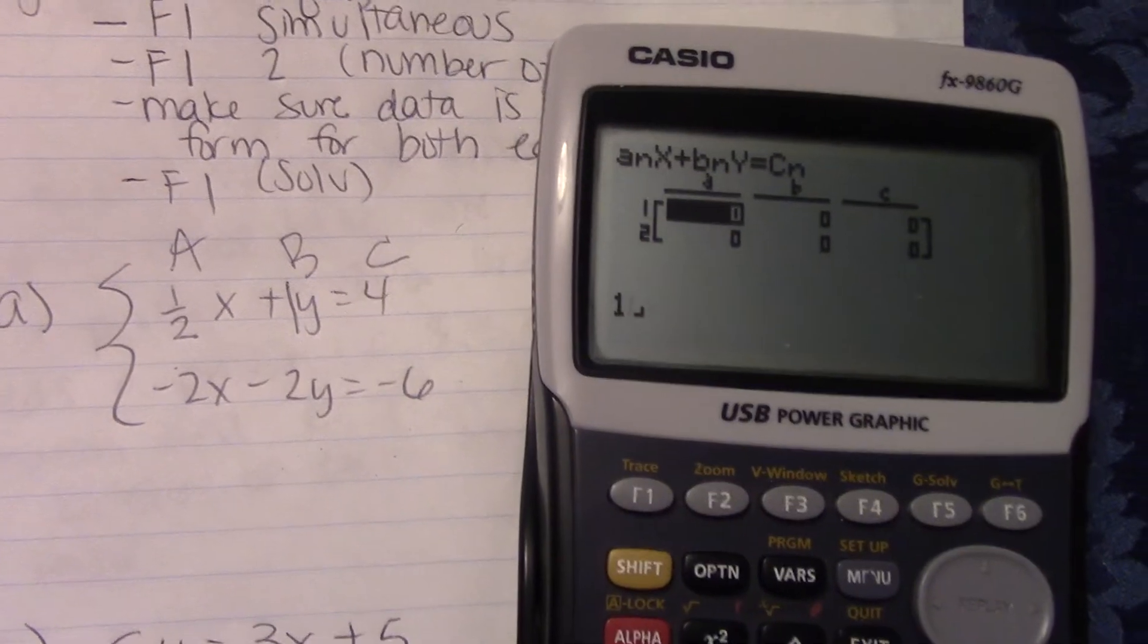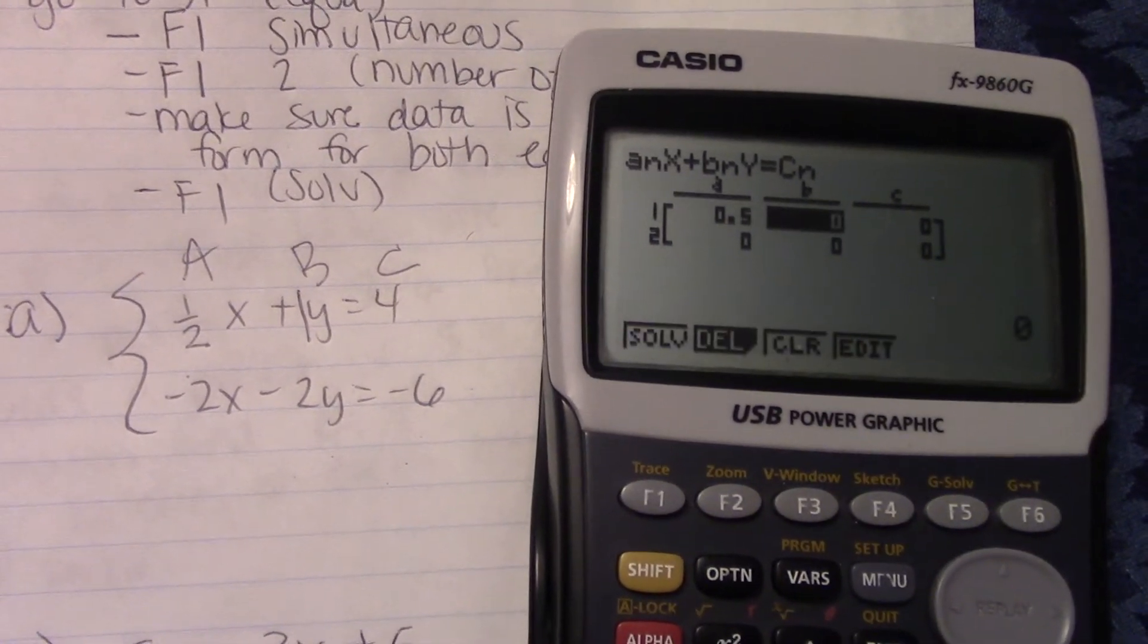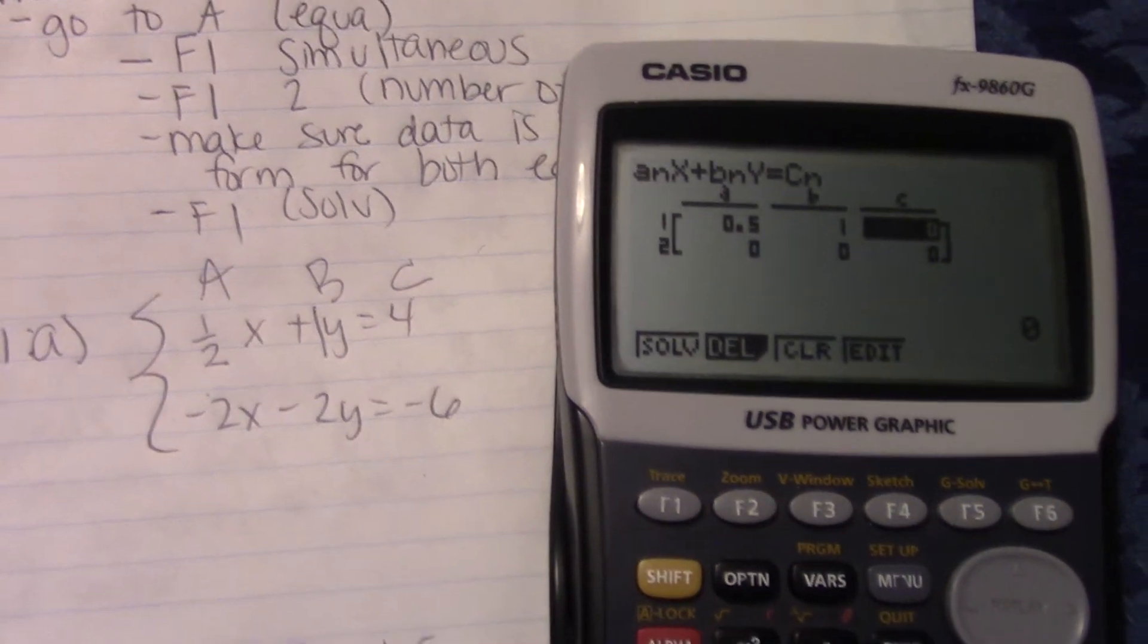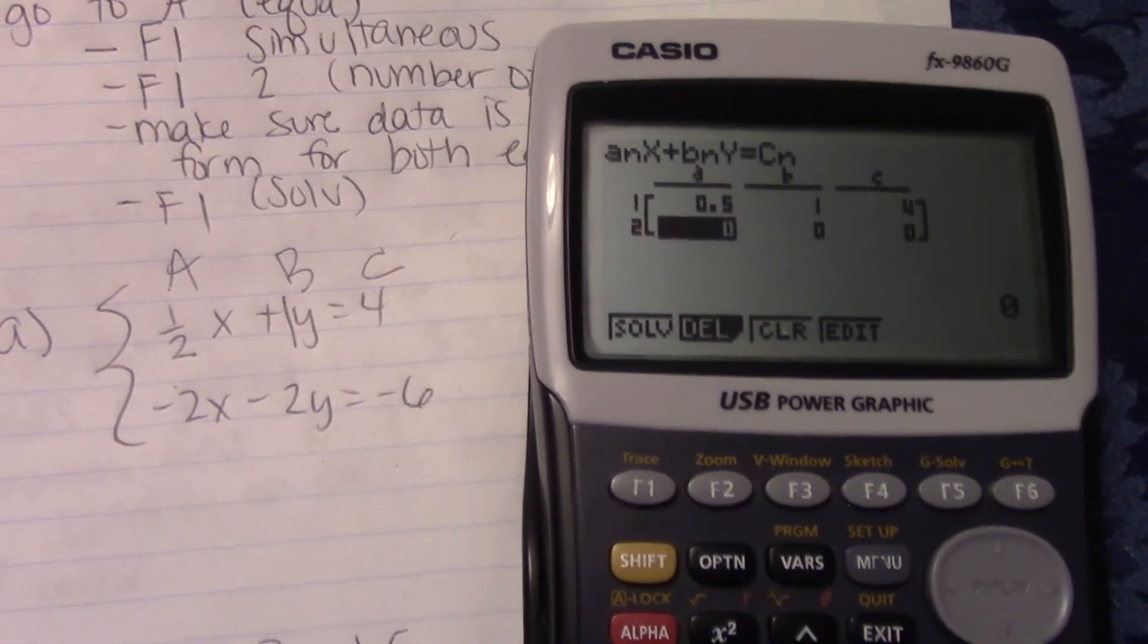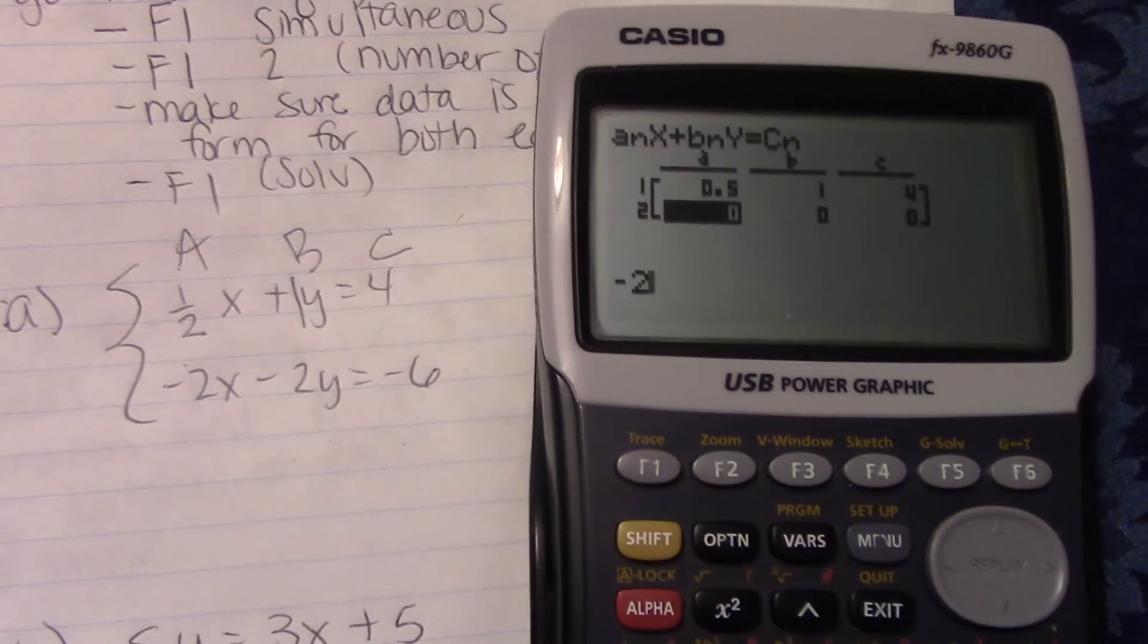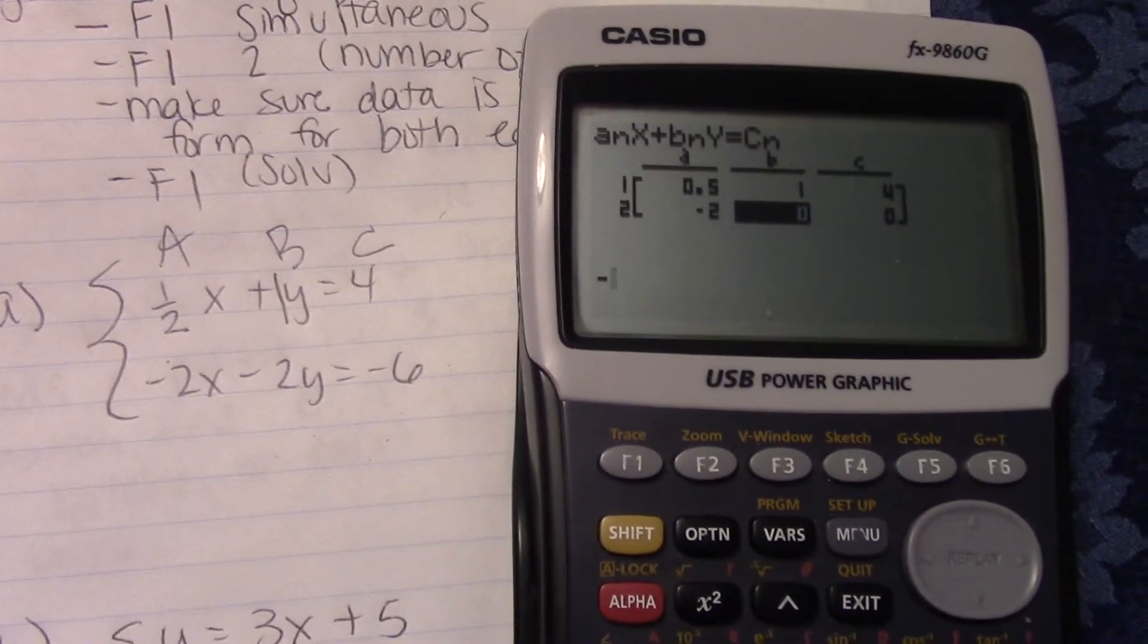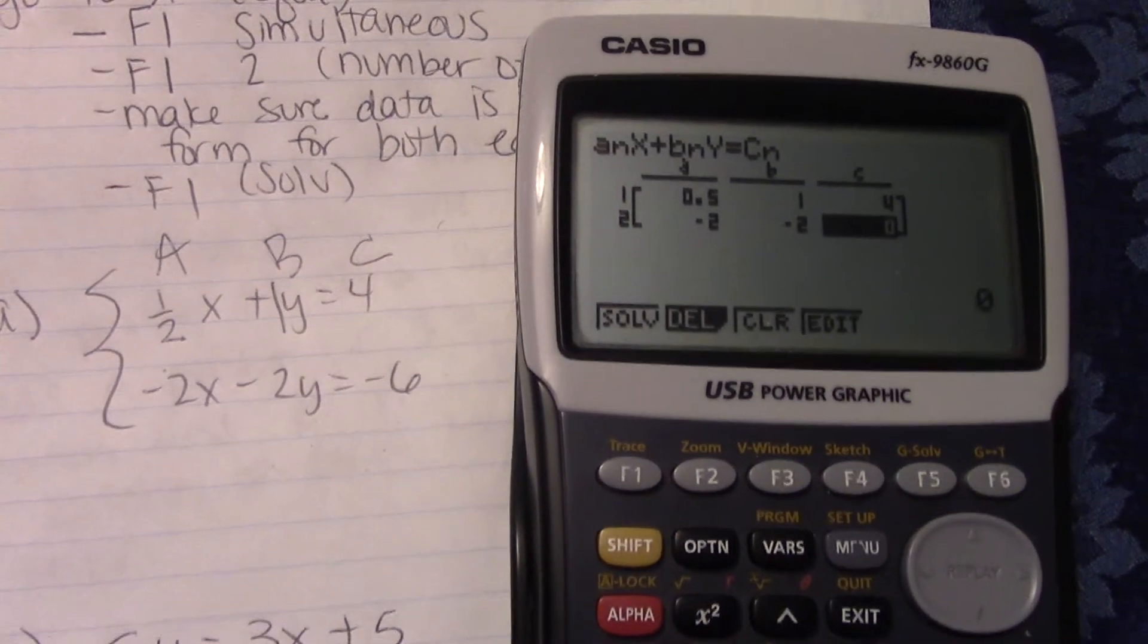So 1 half. So 1 half. And B is 1. C is 4. And then for the other one we have negative 2. And you just hit the execute button each time you want to move over. And negative 2 again. And then negative 6.